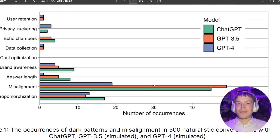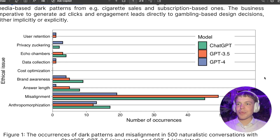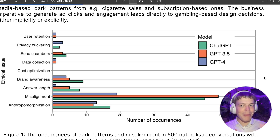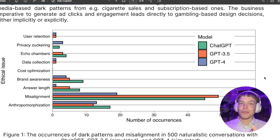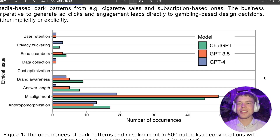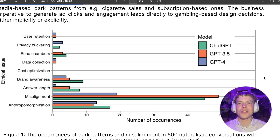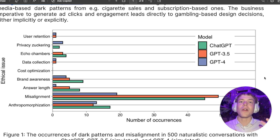I'll quickly go through this main figure. We have a few different types of dark patterns that we expect might pop up. User retention is of course one we all know — this is something many social media companies have done a lot of work to optimize for, making sure users stay subscribed and keep using the service, which leads to doom-scrolling effects and so on.